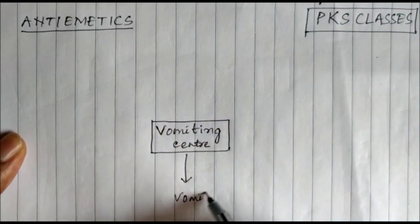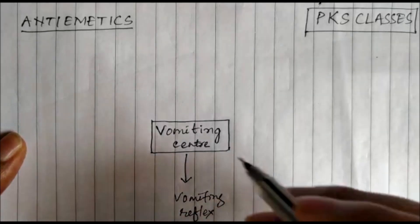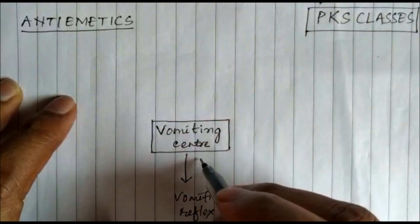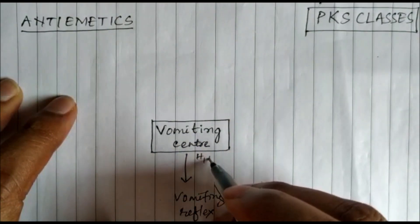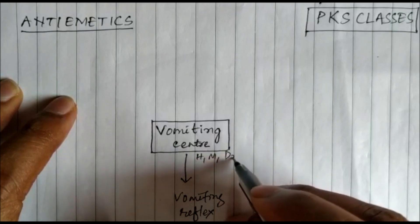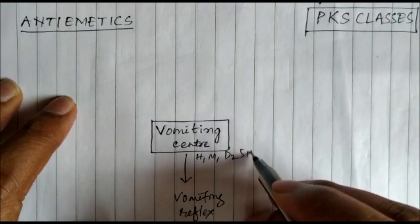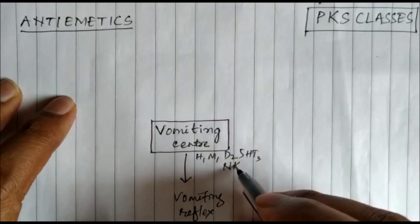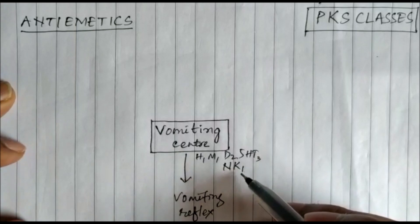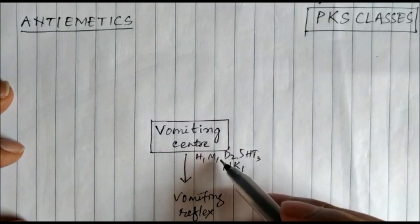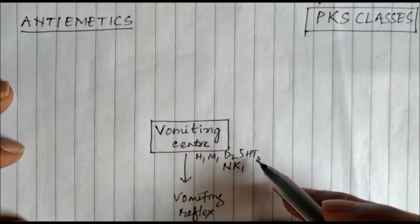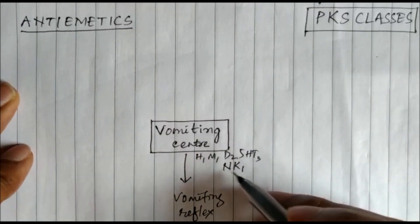The vomiting center produces vomiting as a reflex action. The receptors present in the vomiting center are H1, M1, D2, 5HT3, and NK1 (neurokinin 1, the receptor for substance P). H1 is for histamine, M1 for acetylcholine, D2 for dopamine, 5HT3 for serotonin, and NK1 for substance P.